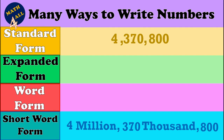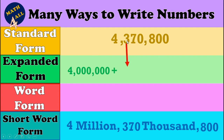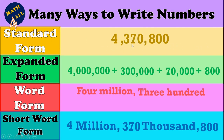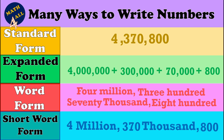Then we have eight hundred — write eight hundred. So the number is: four million, three hundred seventy thousand, and eight hundred. Now for the expanded form: four million plus three hundred thousand plus seventy thousand plus eight hundred. And the word form: four million, three hundred seventy thousand, and eight hundred.